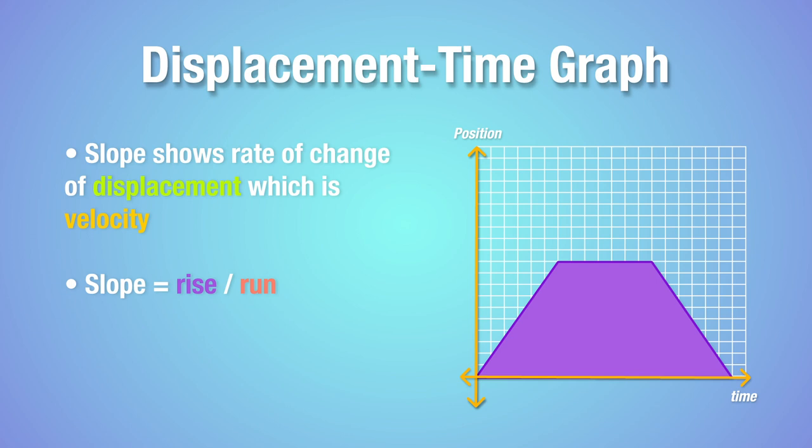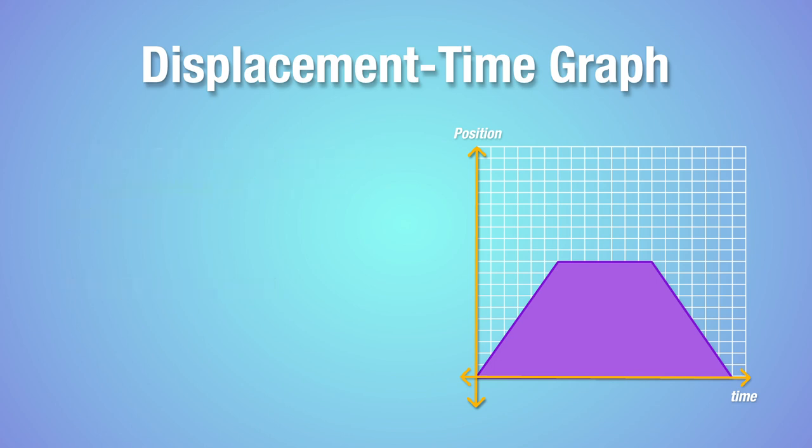So when the slope is positive and steep, the object is moving fast and moving away from the reference point. Consequently, when the slope is negative, this means the object is moving towards the reference point at a certain velocity. In short, in a displacement time graph, the steepness of the slope shows the magnitude of the velocity. That is, the steeper the slope, the faster an object is traveling.